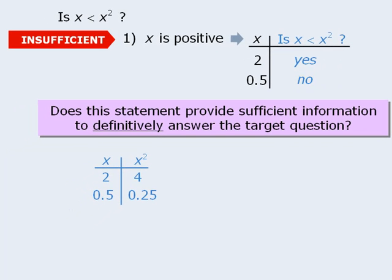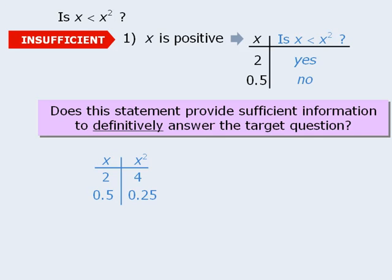Now you may have noticed that in all three examples, the statement was insufficient. You will find that the table method works best for statements that you suspect might be insufficient. The reason for this is that if we cannot demonstrate that there are two different answers to a target question, then the results will be inconclusive.